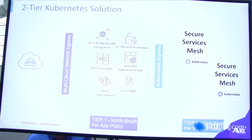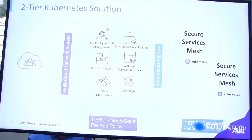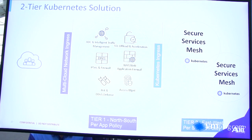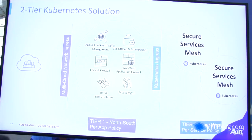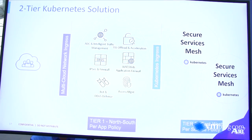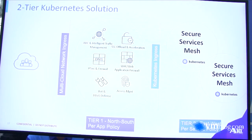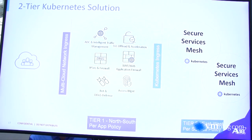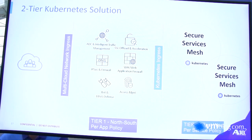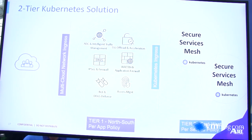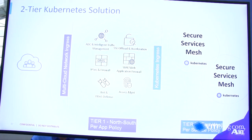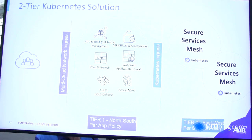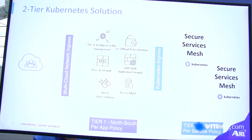Thinking about packet flow: clients come in to multiple clouds wherever your applications are deployed. You have the north-south tier — tier one — and the second tier, which is the east-west proxy, the secure service mesh. You can have multiple Kubernetes clusters running across clouds, applying all your security policies with full traffic visibility. All of it is managed through Harmony Controller, the centralized access point, which is our big differentiator — integrating the north-south proxy into the same visibility and configuration station.